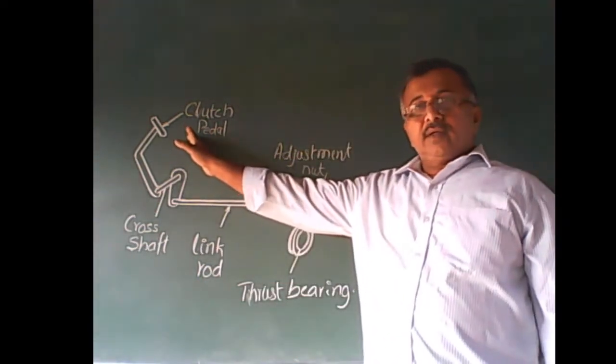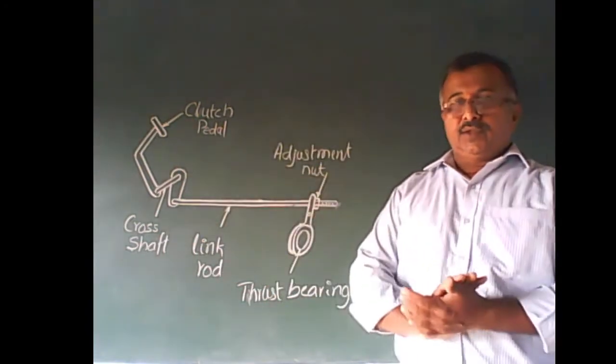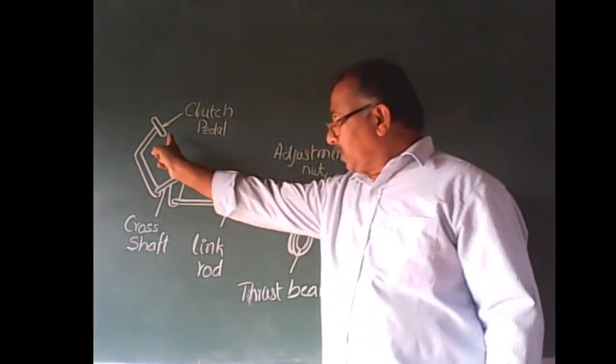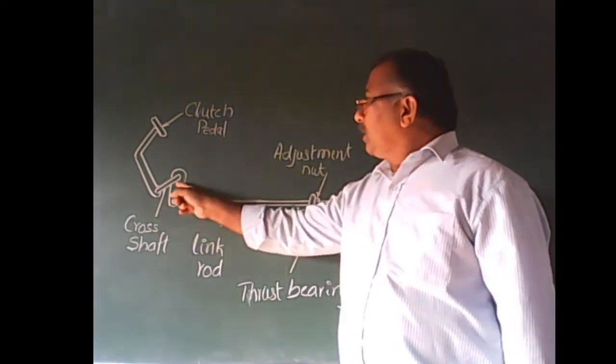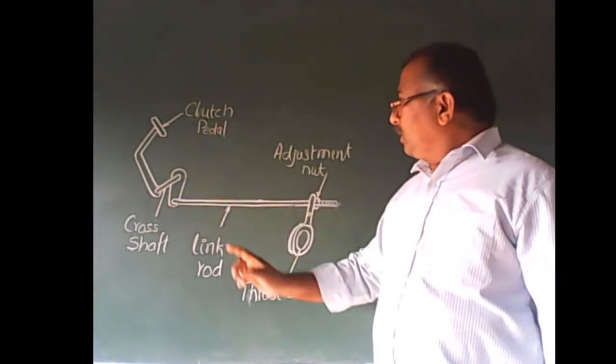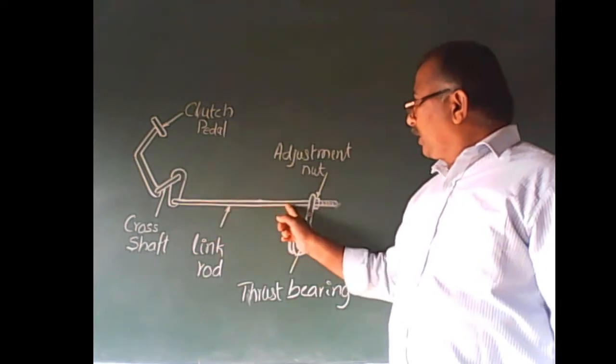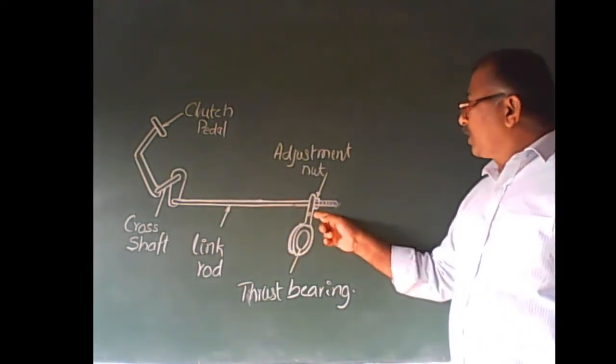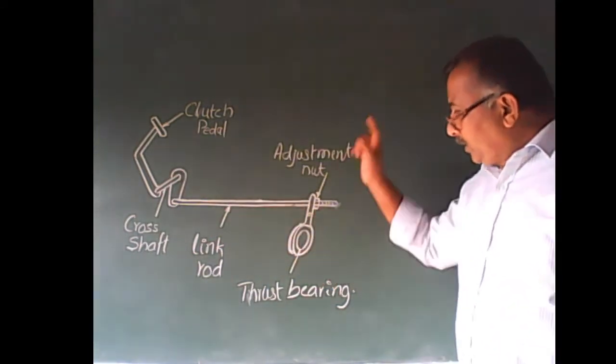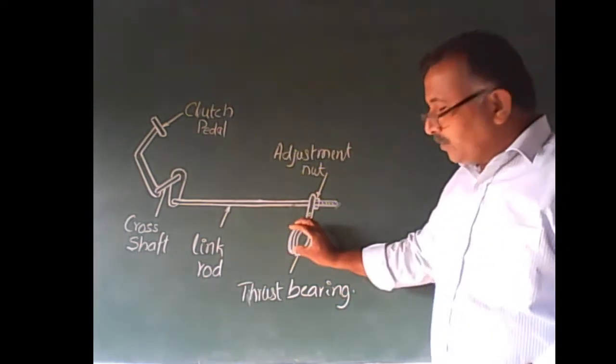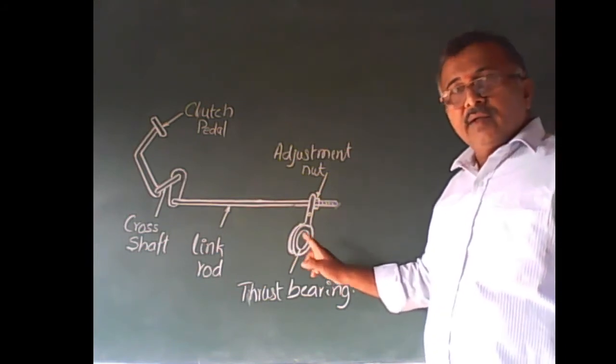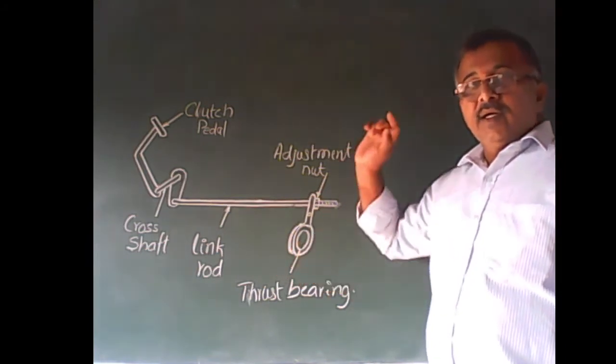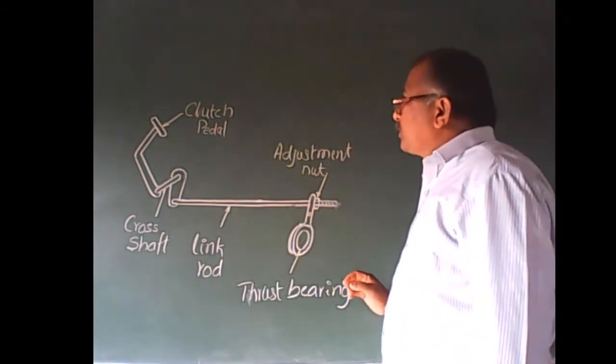First one, mechanically operated clutch. In that one we are having clutch pedal, cross shaft, arm, link rod, fork, and thrust bearing. Thrust bearing which is mounted on the clutch shaft, back side of the release fingers.